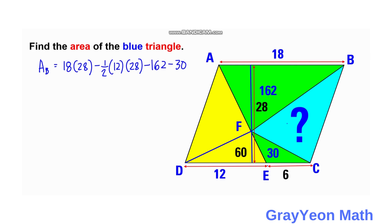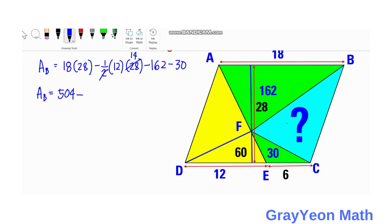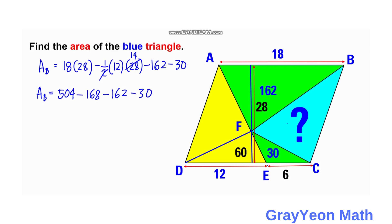So that is essentially the area of the blue, so we just need to simplify this. So the area of the blue is equal to... this becomes 504 minus this becomes 14 times 12, and that is 168. So 168 minus 162 minus 30, so the area of the blue will be equal to 144, 144 square units. And that is our answer.